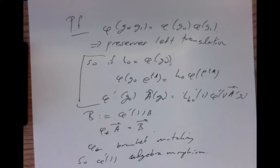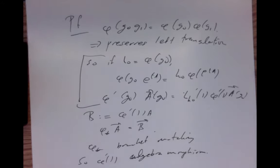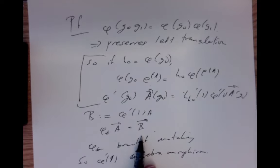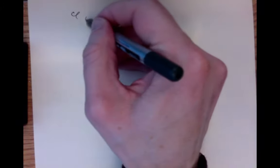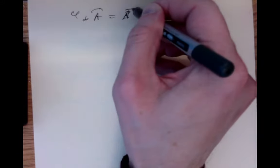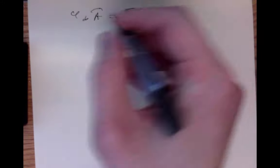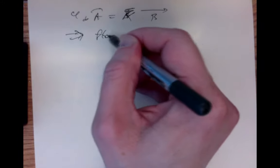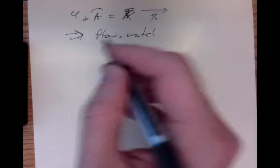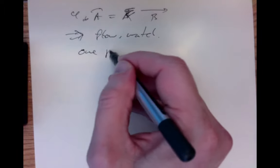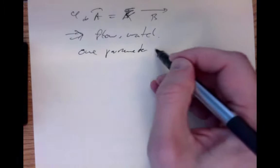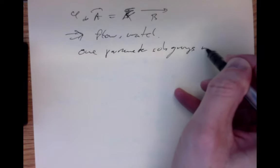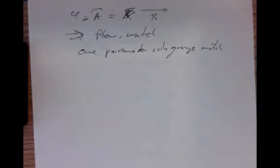It's already linear and now it matches up brackets. The one-parameter subgroups are matched up because the flows of these vector fields are the one-parameter subgroups. Phi star of vector A equals vector B implies that flows match — if the vector fields match, the flows match. So the one-parameter subgroups, which are the flows through the identity, match up.